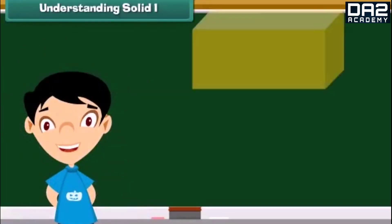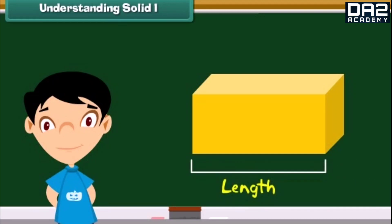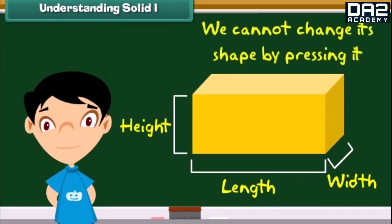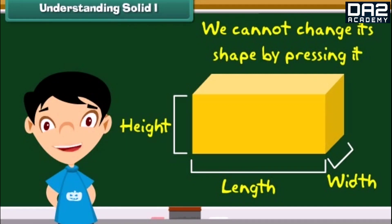Friends, look at this brick. This is a solid. This brick has a fixed shape. It has length, width and height. It is hard. We cannot change its shape by pressing it. Thus, we can say a solid has definite shape and size and cannot be pressed easily.